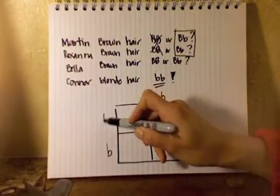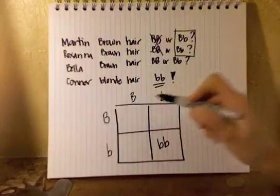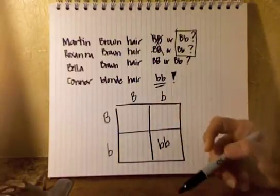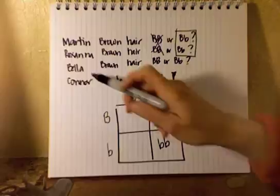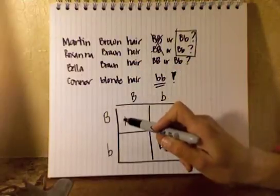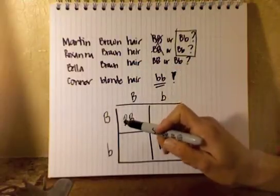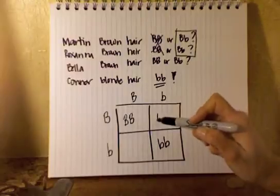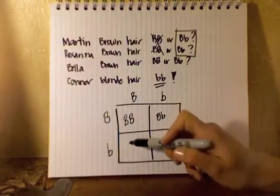Bella, on the other hand, could be homozygous dominant, or she might be heterozygous.